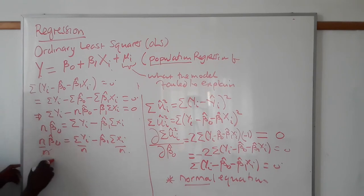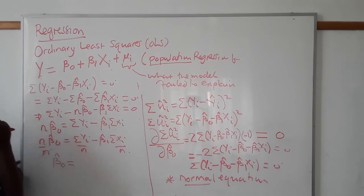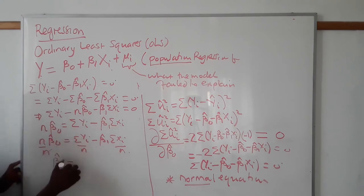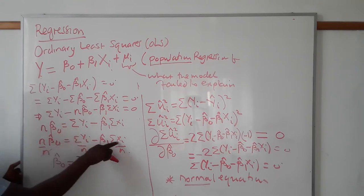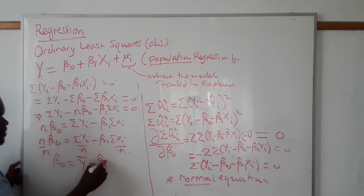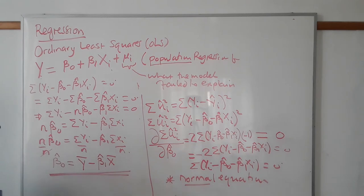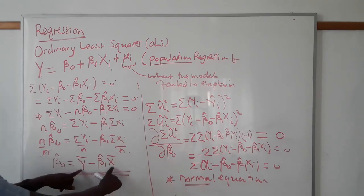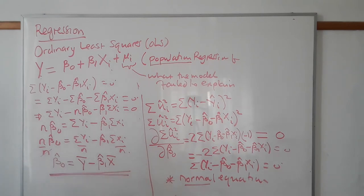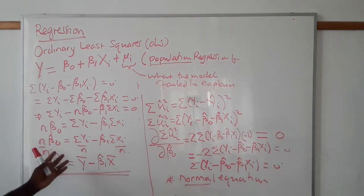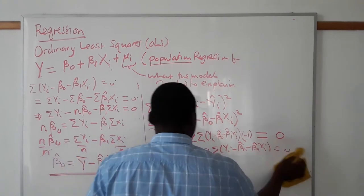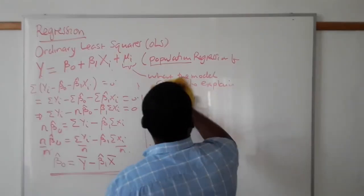That simplifies to: beta_0-hat equals y-bar minus beta_1-hat times x-bar. This is the formula for finding beta_0. If I know beta_1 and these two means from the sample, I can estimate beta_0 by plugging in beta_1 times x-bar and subtracting from y-bar. That's your estimator for beta_0.